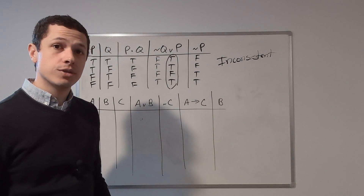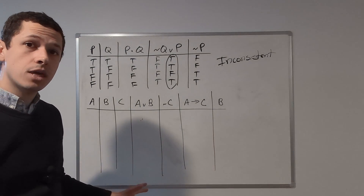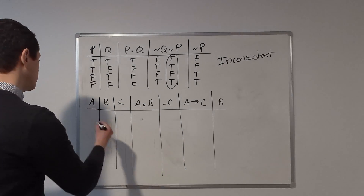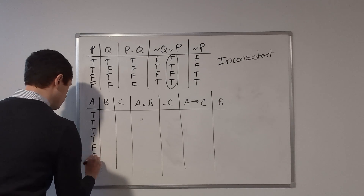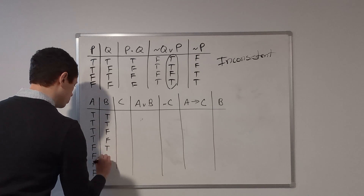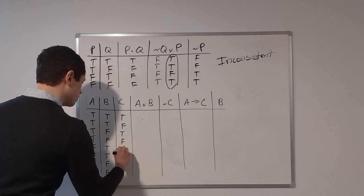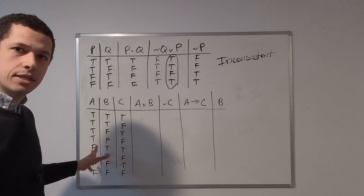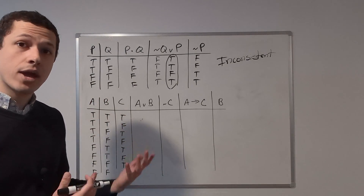Now let's move on to this more complicated set of statements. We're dealing with three atomic statements — A, B, and C — which means we'll be writing out eight rows of truth values. I'll quickly write those down: T, T, T, T, F, F, F, F for A; T, T, F, F, T, T, F, F for B; and T, F, T, F, T, F, T, F for C. If you're unsure why the truth values are written in that order, I recommend watching my video on how to set up truth tables.